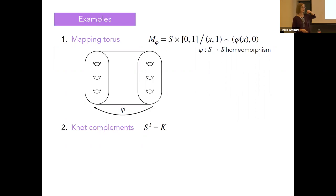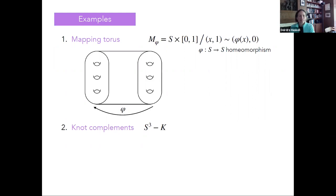You can take any surface — it doesn't have to be a torus. It can have multiple holes, higher genus, or you can take a sphere, though you're not going to have many interesting homeomorphisms there.